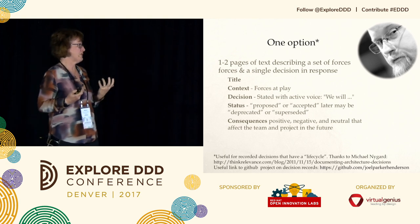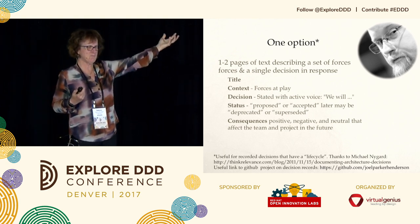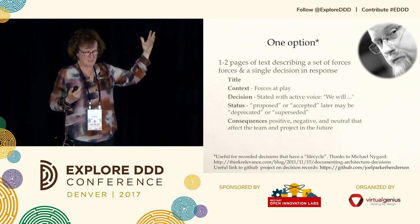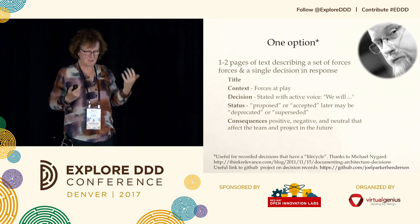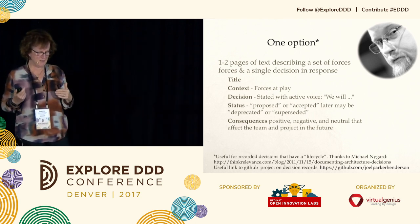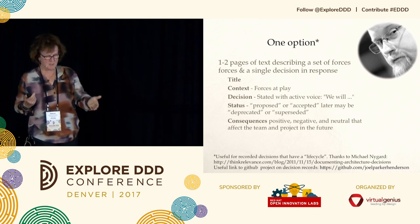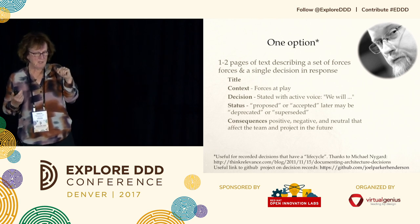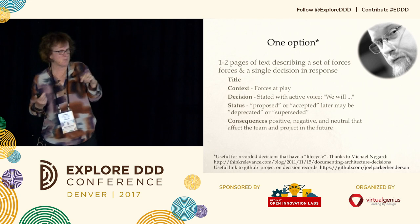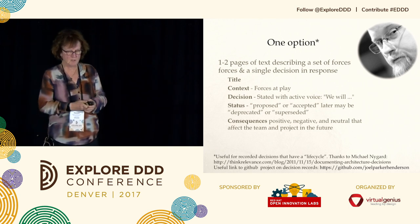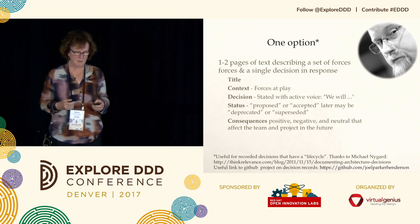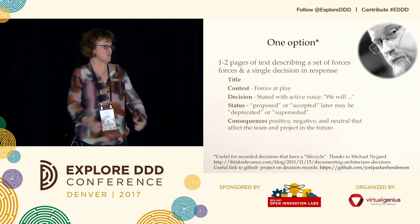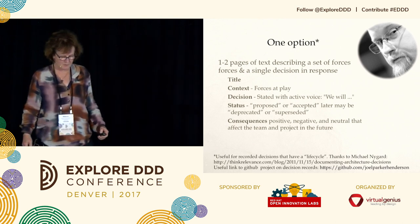One option I like — maybe that's my bias because it's in a pattern form — is Michael Nygaard's format: one to two pages of text with a title, the forces at play, the decision ('we are doing this'), a status with a lifecycle (proposed, accepted, deprecated, superseded), and the consequences. I've lately been getting clients to document those decisions and put them close to the code. I like decision records — that's a good idea.